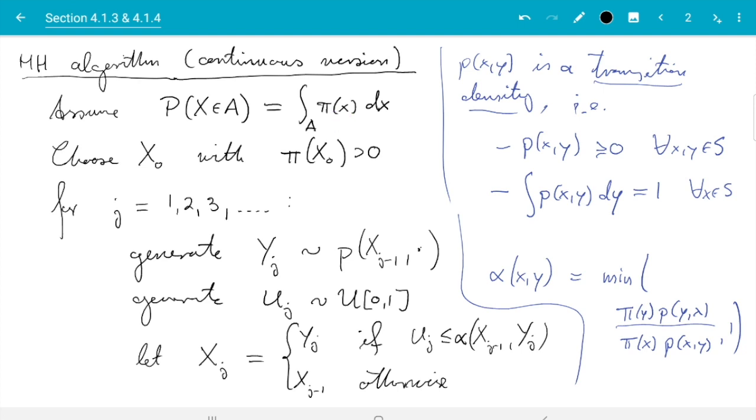And the transitions for the proposals are given in form of a transition density that is called p here, and that p tells us given we are currently at x what is the distribution of the proposal, and that's given as a density as a function of y. From that we are going to compute alpha later and we generate proposals and accept proposals with probability alpha given by this formula.